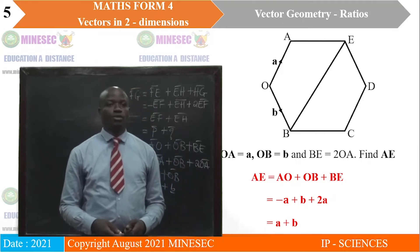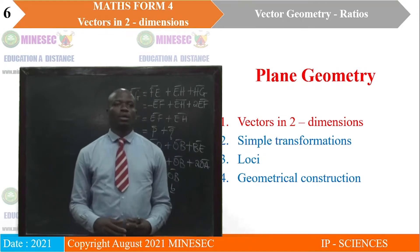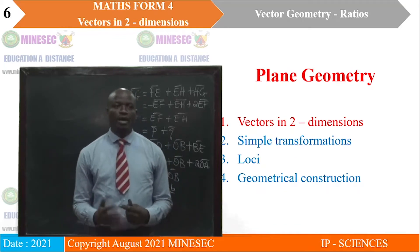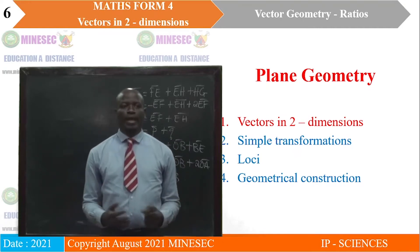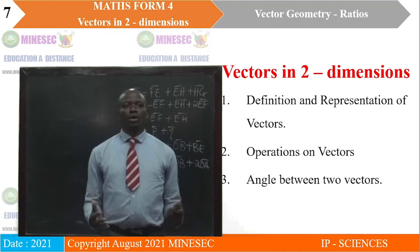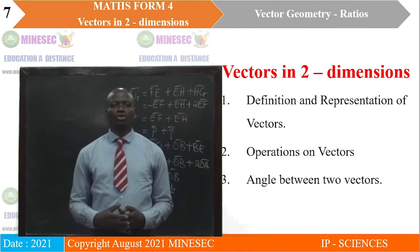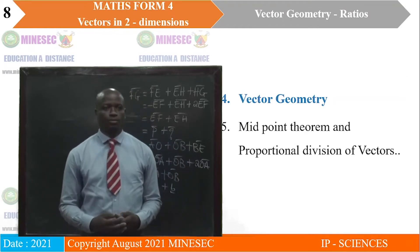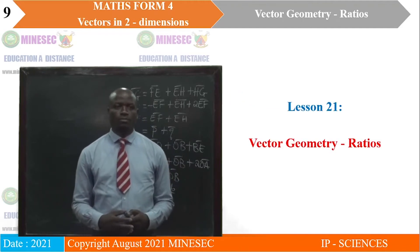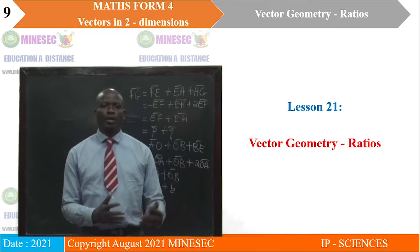As we move on, we want to remind ourselves that we are in the module plane geometry. So far, we are looking at vectors in two dimensions. After that, we will look at simple transformations, loci, and geometrical construction. Under vectors in two dimensions, we have done definition and representation of vectors, operations on vectors, and angle between two vectors. In the last lesson, we started vector geometry, which we are still continuing. After that, we will see midpoint theorem and proportional division of vectors. So this lesson is titled Vector Geometry: Ratios. We will see how ratios play a part in vector geometry.